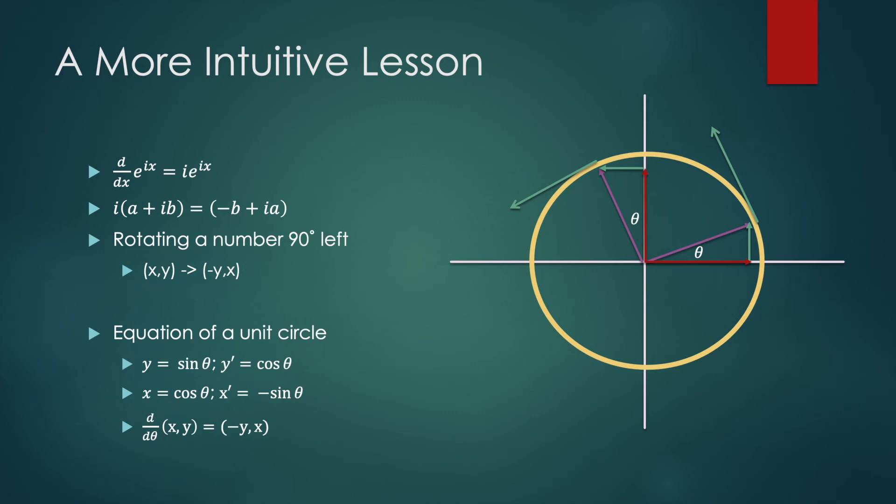And now we have e to the ix, which we know starts at a point of one in the real direction when x is zero, and its derivative is always equal to a 90 degrees rotation of itself. So e to the ix is a unit circle function in the complex plane where we are rotating 90 degrees left.